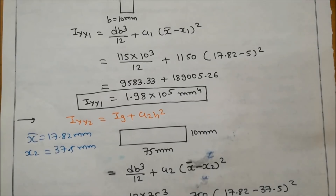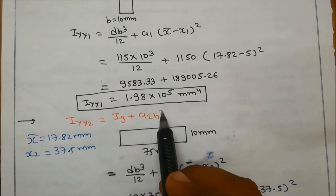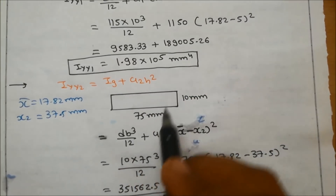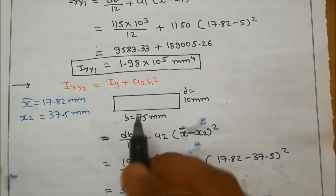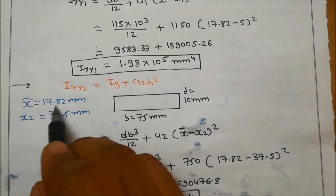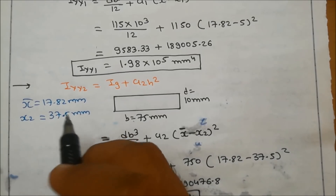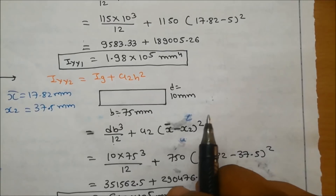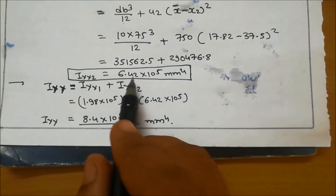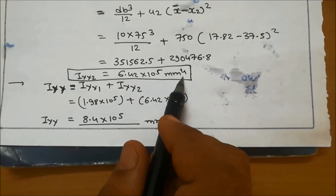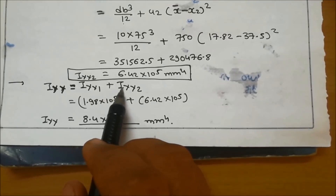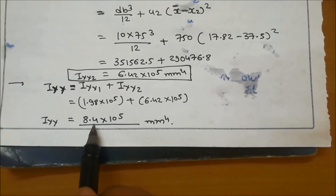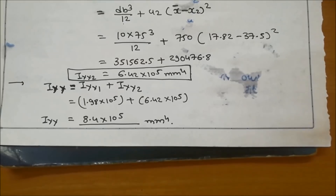For the second part, Iyy2 equals Ig plus A2·(X-bar − X2)². The second part dimensions are 75 mm and 10 mm, X-bar is 17.82 mm, and X2 is 37.5 mm. Solving gives Iyy2 equal to 6.42 × 10⁵ mm⁴. Therefore, total Iyy equals Iyy1 plus Iyy2, giving Iyy equal to 8.4 × 10⁵ mm⁴. In this way you can easily find the moment of inertia.